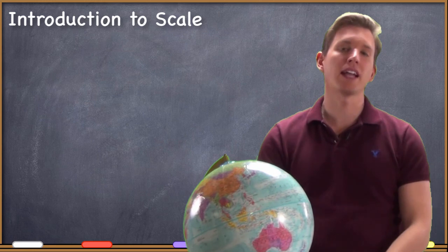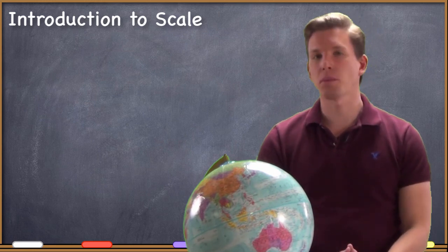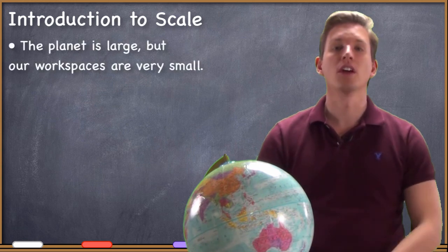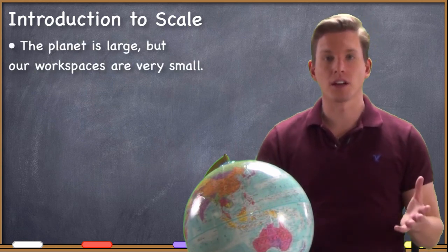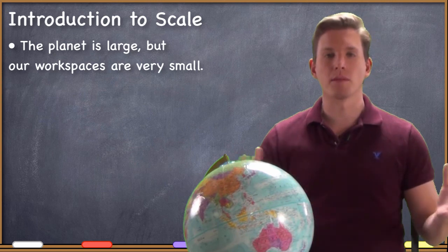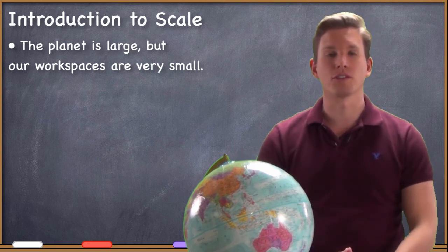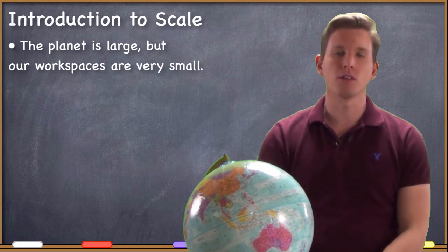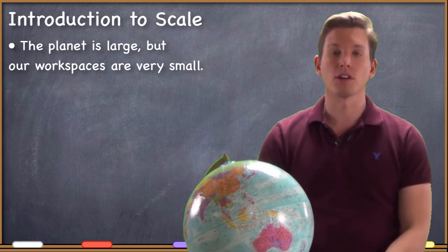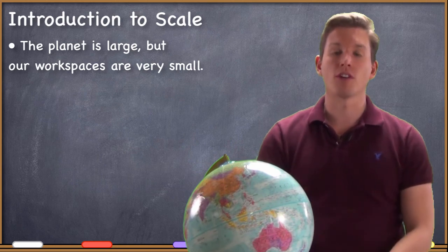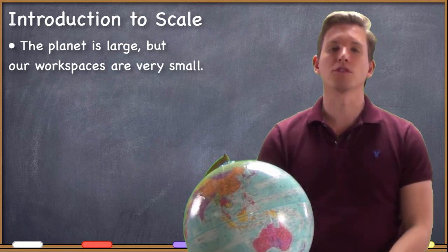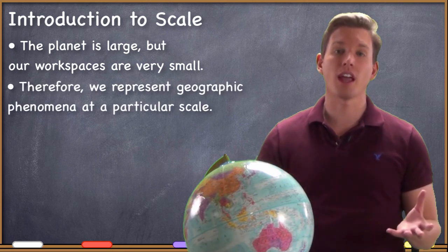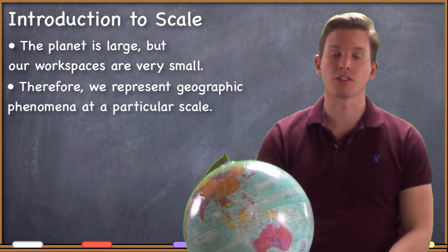The planet is very large, but most of the space that we have to work in is very small. We either have to work on the surface of a desk, or on a laptop computer monitor, or even on a desktop monitor, which is a little bit larger but not much. Even if you're working on a big projection screen, you're still working on a surface that's much smaller than the actual Earth. So when we represent geographic phenomena in a GIS, we have to represent that phenomenon at a particular scale — we represent it smaller than it actually is.